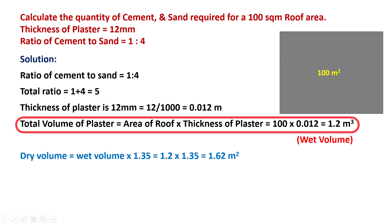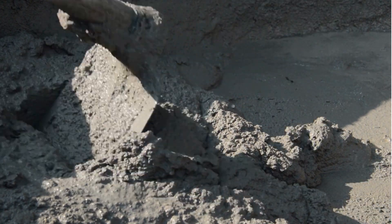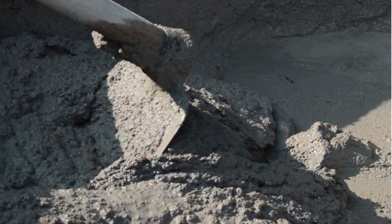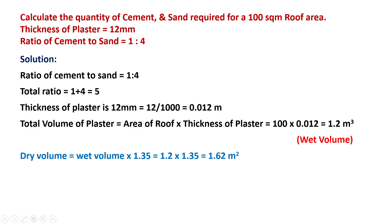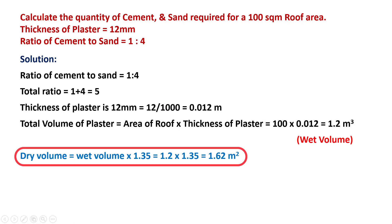To account for the fact that the plaster mix will reduce in volume due to the addition of water during the mixing process, you need to multiply the total volume by a factor of 1.35 to get the dry volume — that is, the true volume of material needed to cast 1.2 m³ of wet plaster. So dry volume = 1.2 × 1.35 = 1.62 cubic meters.